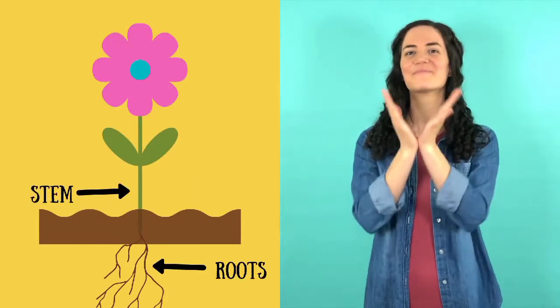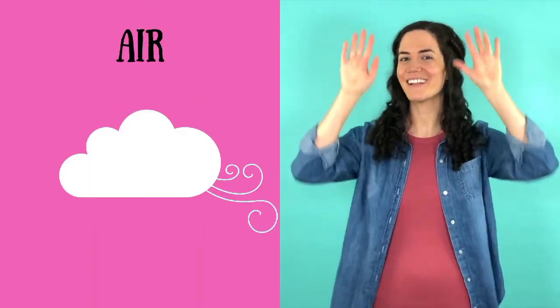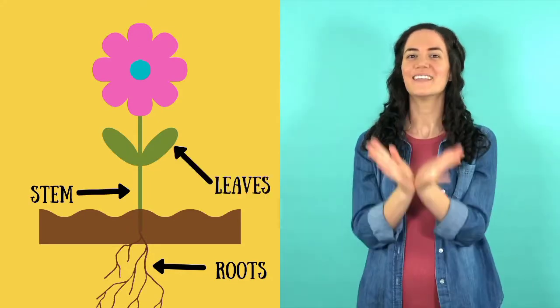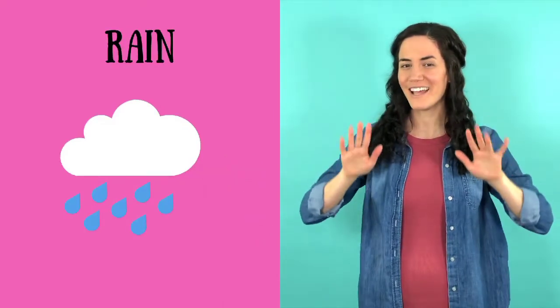Roots, stem, leaves, flower, need sun and air, and a little rain shower. Roots, stem, leaves, flower, need sun and air, and a little rain shower.